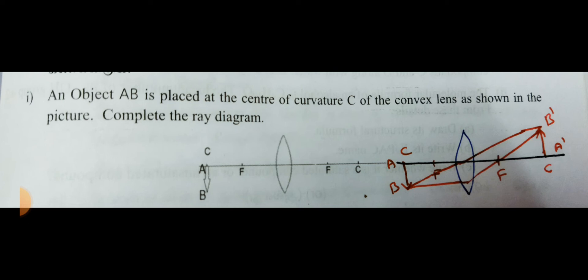So when you place the object at the centre of curvature, then the image also we can obtain at the same point, but the other side. But here the object is inverted, so that the image will become erect, straight. So that is the main difference in this question.